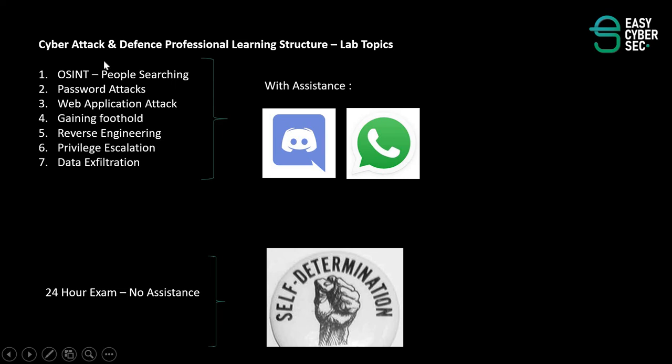How is the lab content structured? This is only an example. In our lab, you first have to perform open source intelligence, searching for data that will help you hack into an organization. Then you perform password-related attacks, followed by web application attacks, gaining a foothold in a box, and maintaining yourself. From there, you do some reverse engineering to get important secrets, then perform privilege escalation to become the highest privileged user, and finally exfiltrate data.